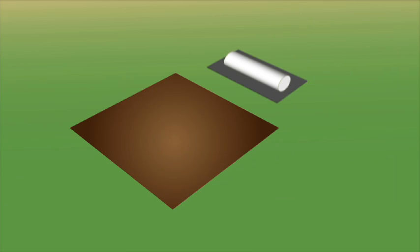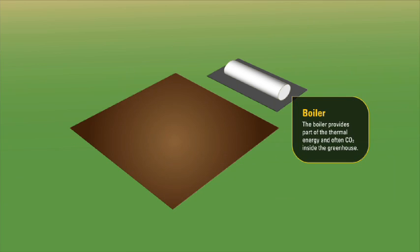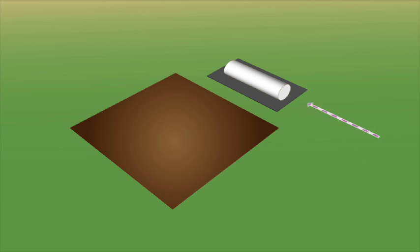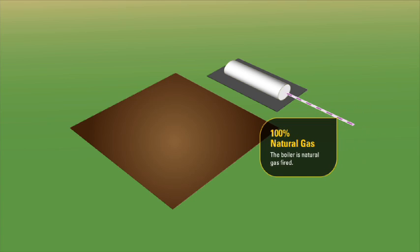In separate heat and power systems, the boiler provides part of the thermal energy found inside the greenhouse and often CO2 as well. The boiler is natural gas fired.